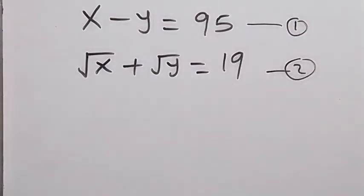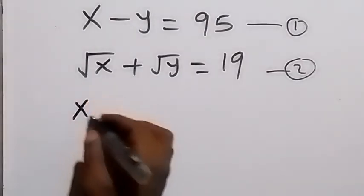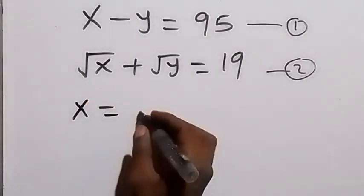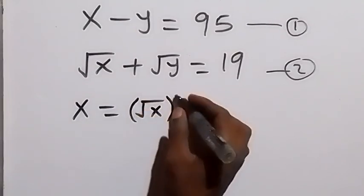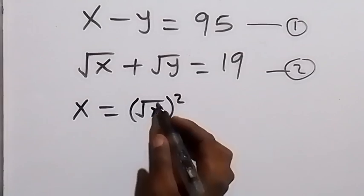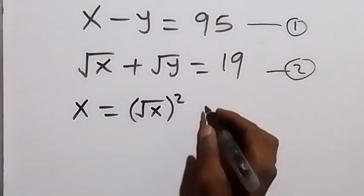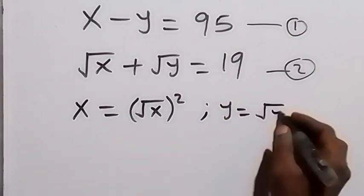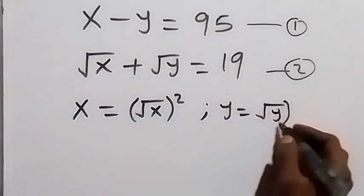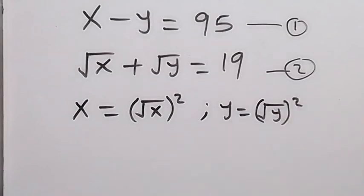From here, we can rewrite equation 1 in terms of root x and root y. That is, we can write x as the same thing as root x, then squared. Because squaring cancels the square root, we still have x. In the same way, we can write y equals to root y squared — square cancels square root, we still have y.